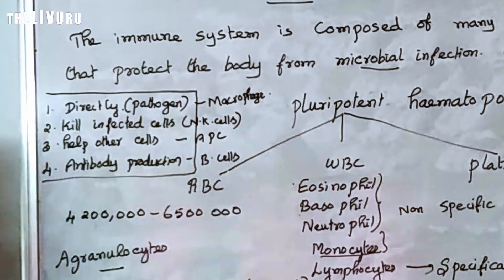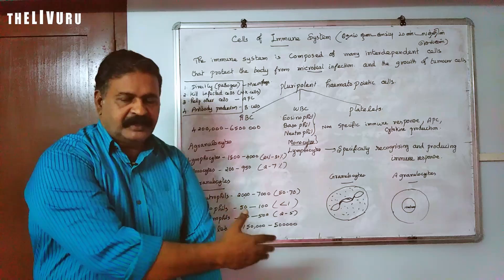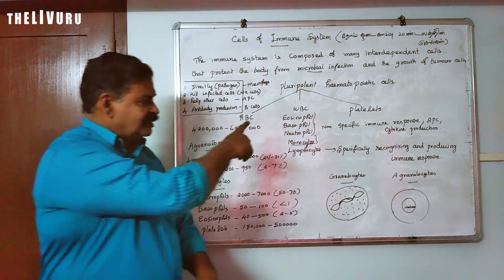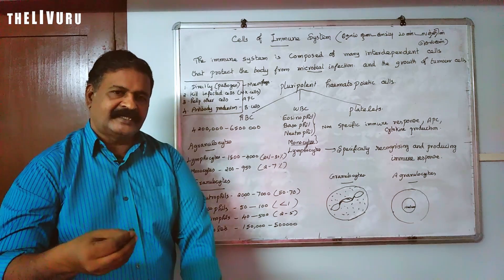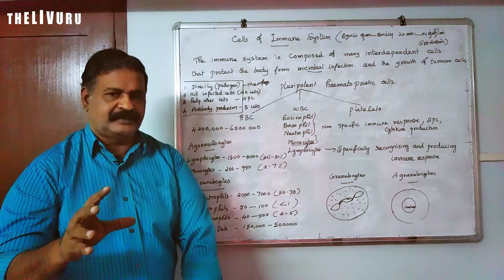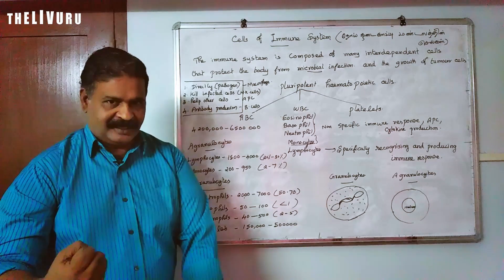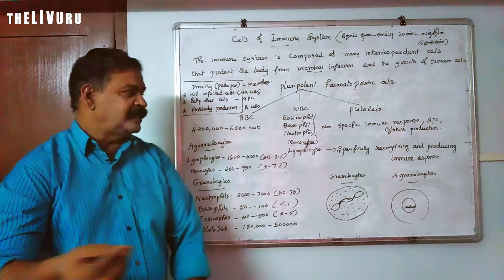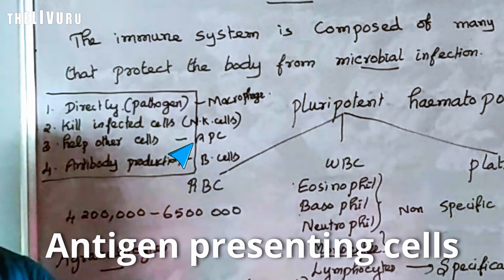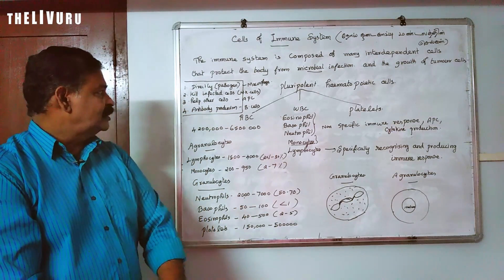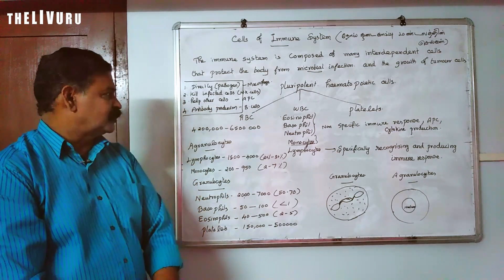Certain cells kill infected cells — for example, NK cells, natural killer cells. There are also B-type cells. There are certain cells which help other cells and boost their activity — for example, APC, antigen-presenting cells. There are certain cells which produce antibodies; we know these as B cells.